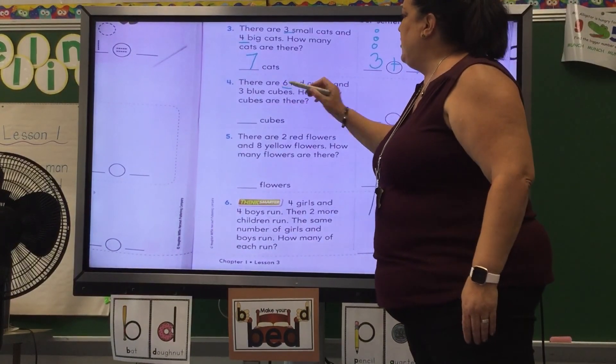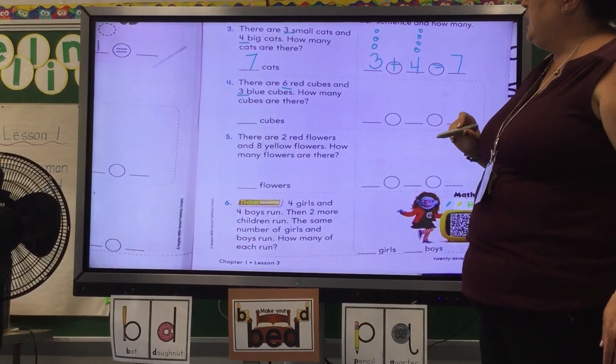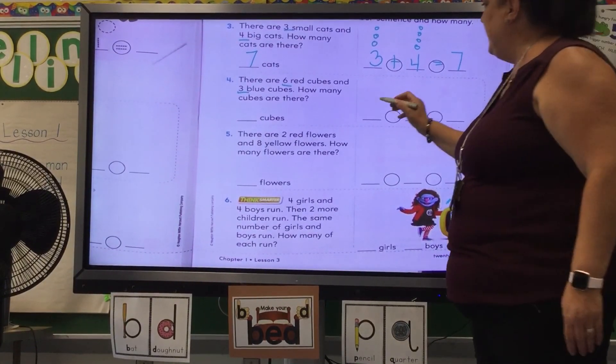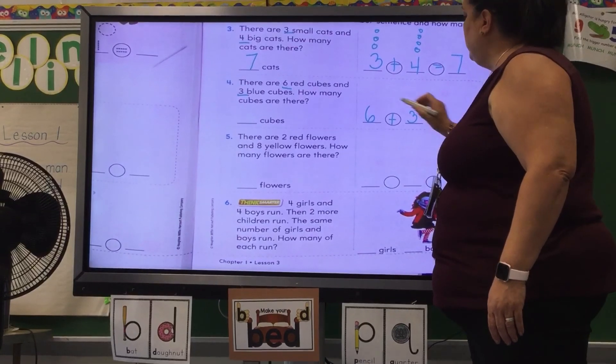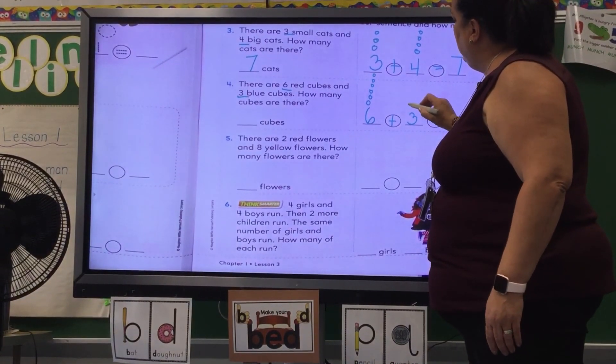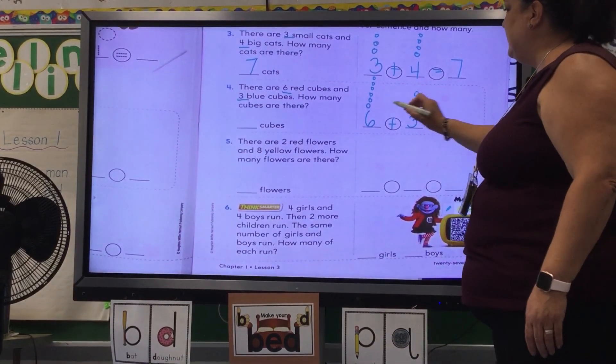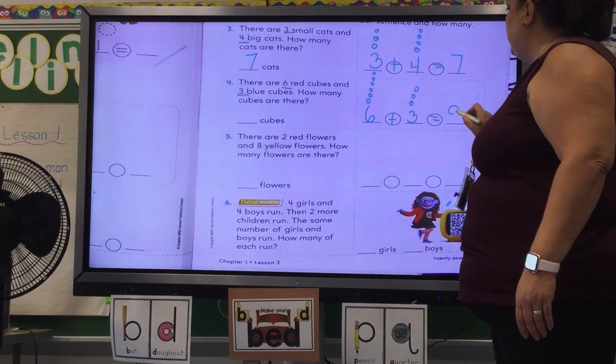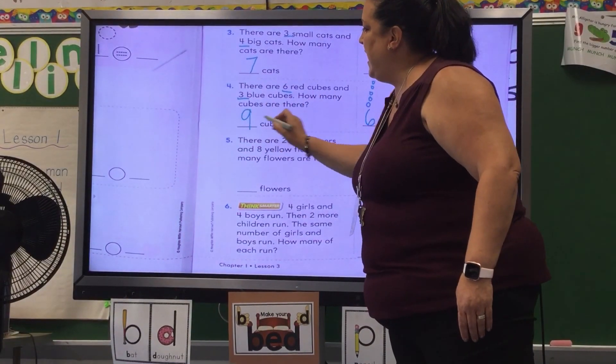There are six red cubes and three blue cubes. How many cubes are there? You should have had six plus three equals. You could draw them in. You should have counted them. I'm not going to count them for you. You should have done this. Six plus three equals nine. Did you get that answer? Nine cubes.